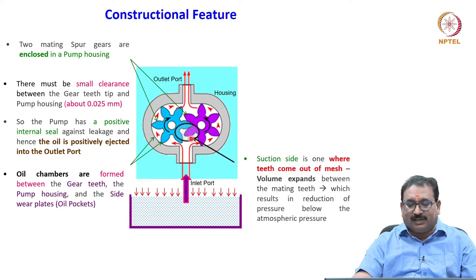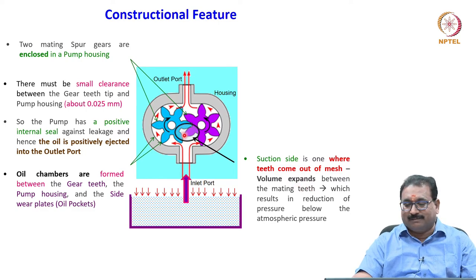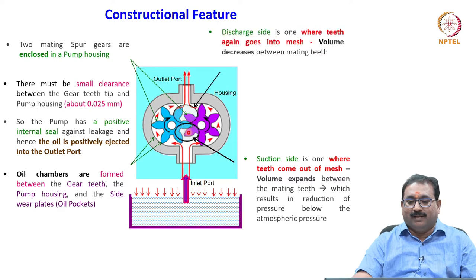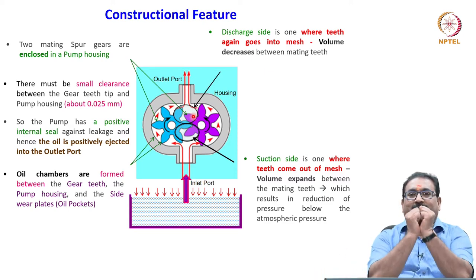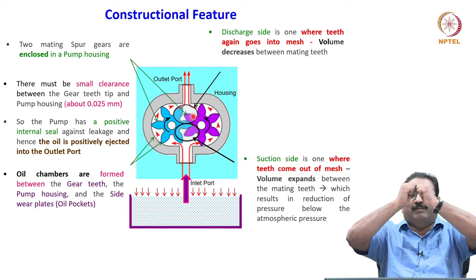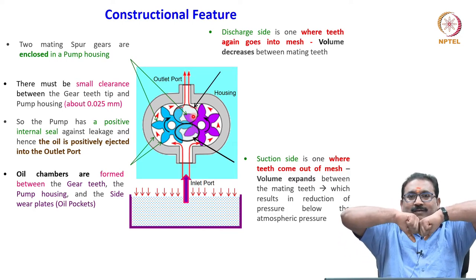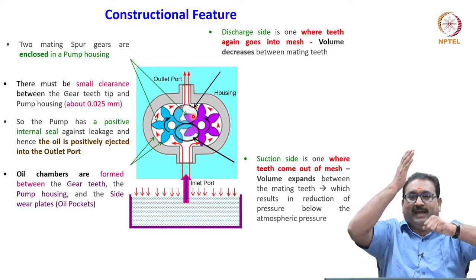The suction side is where teeth come out of mesh — volume expands between the mating teeth, which results in reduction of pressure below atmospheric pressure. The discharge side is where the teeth go back into mesh — volume decreases — and the oil is ejected. When the gear unmeshes, vacuum is created and it sucks due to the differential pressure.